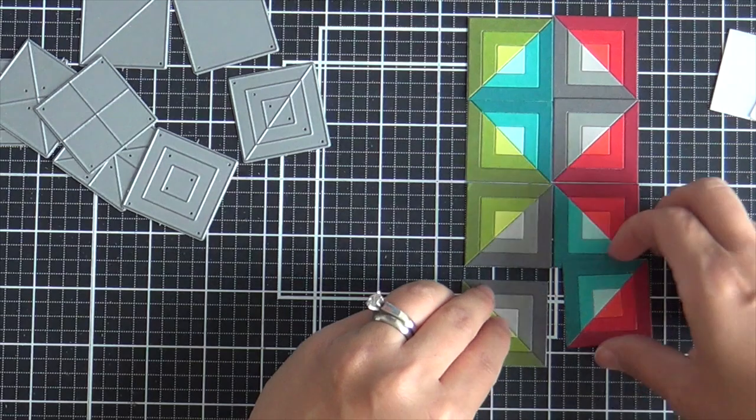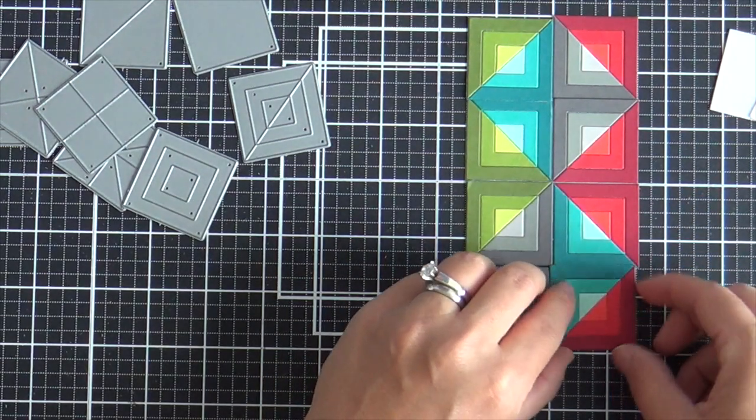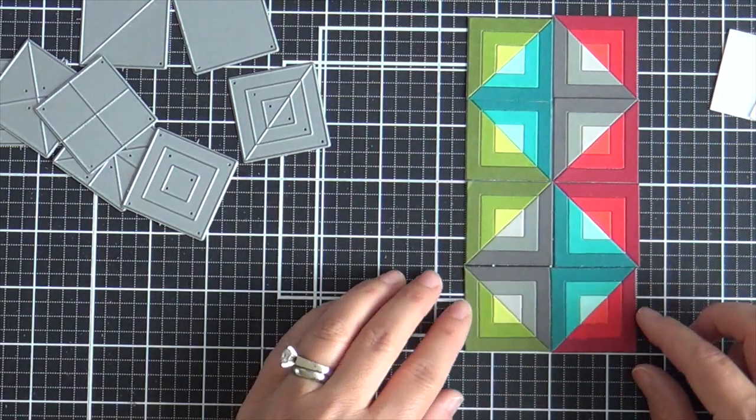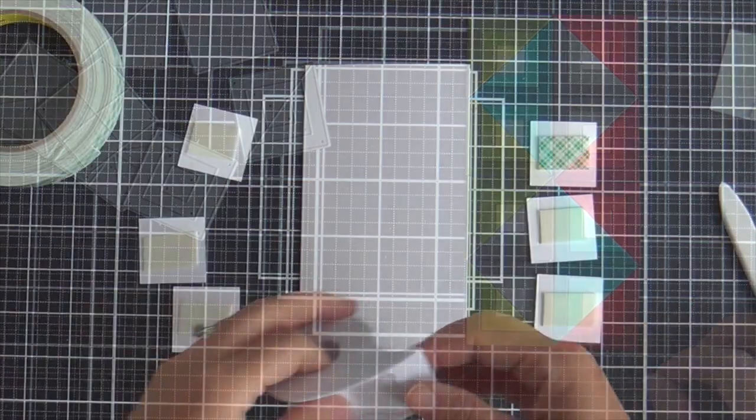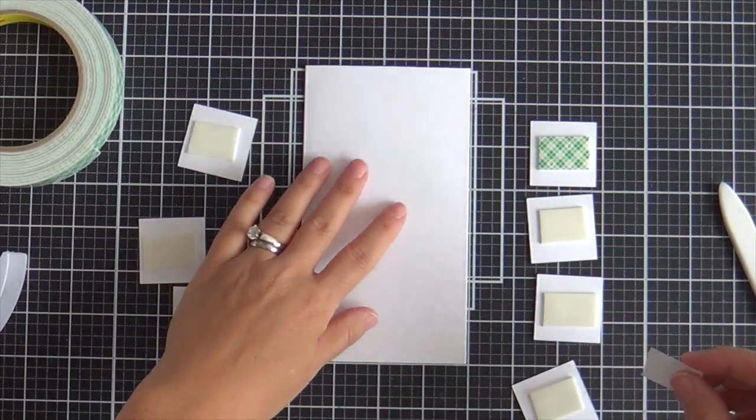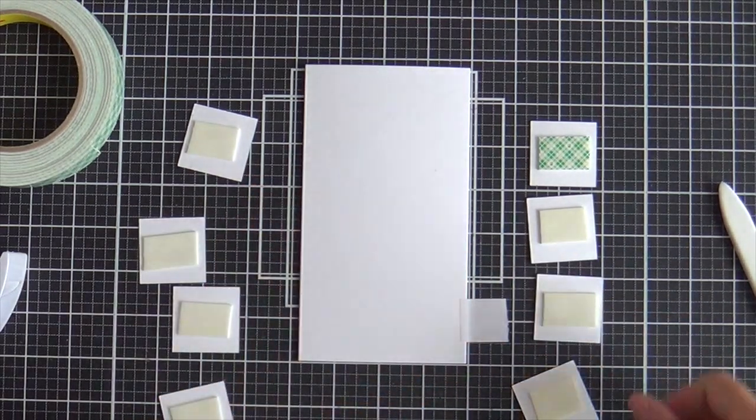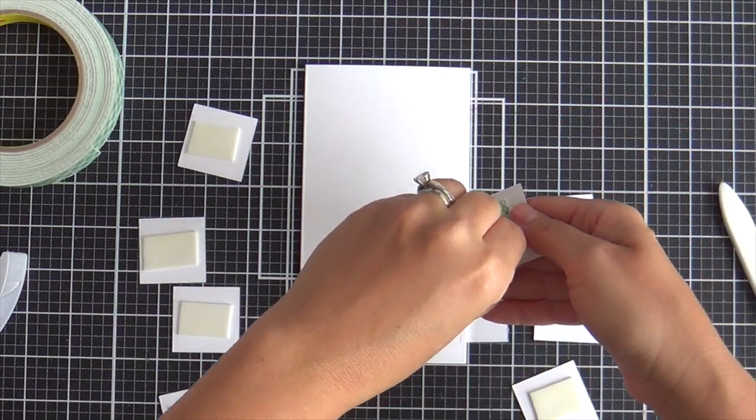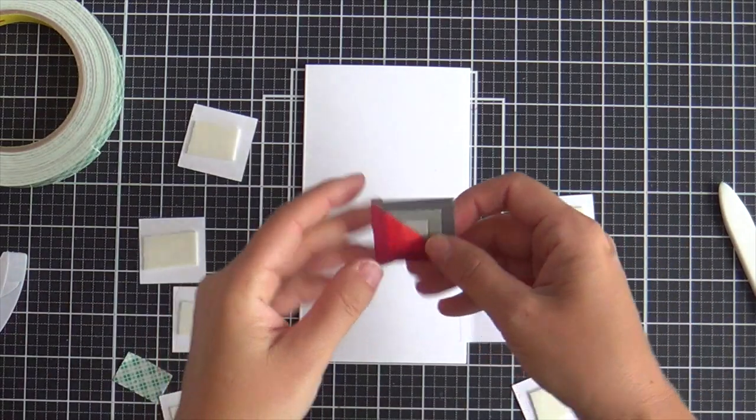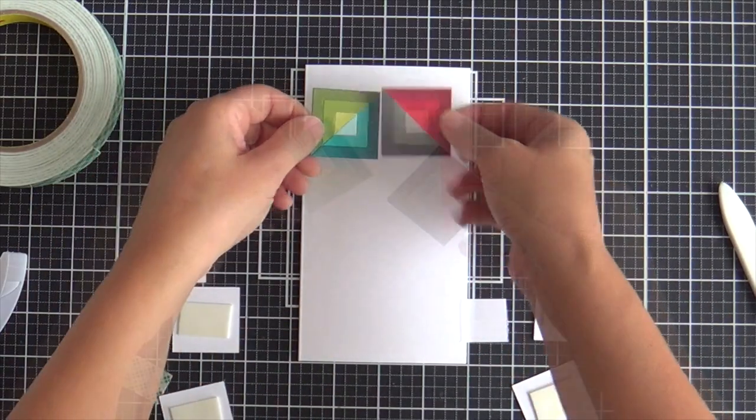Okay, so here we have our eight squares and this design, it's like an optical illusion that is just a feast for the eye. So I have a card base here. My card base is six and three-fourths inch tall by three and three-fourths inch wide.